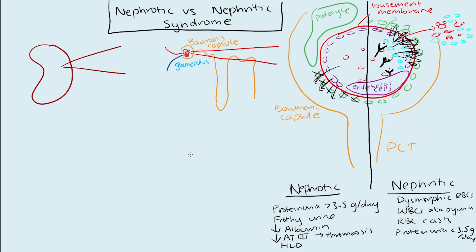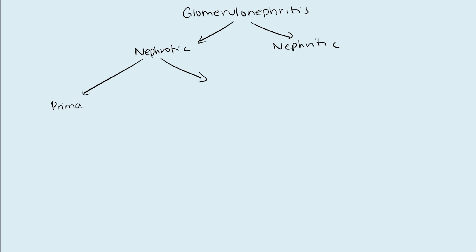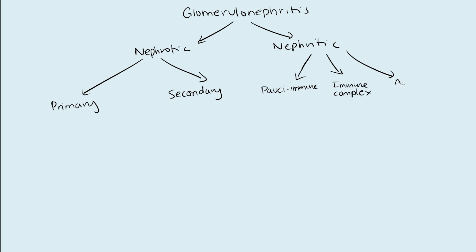Knowing this, let's go through an actual approach to evaluating glomerulonephritis. We can go down two branch points: nephrotic or nephritic syndrome. For nephrotic syndrome, we're really going to go down two branch points as well — primary causes and secondary causes. The way you want to frame the etiologies for nephritic syndrome is slightly different: three categories — pauci-immune, immune complex mediated, or anti-GBM.